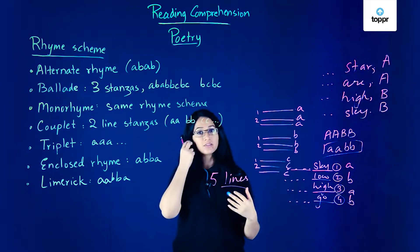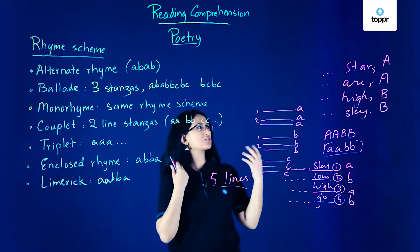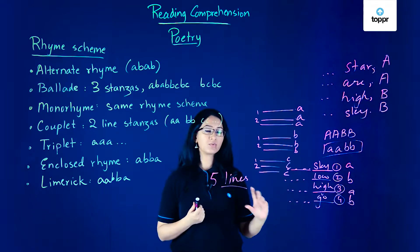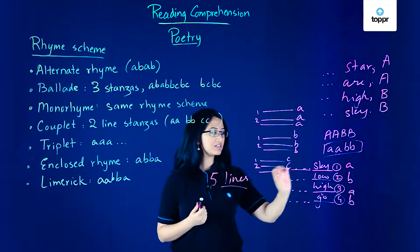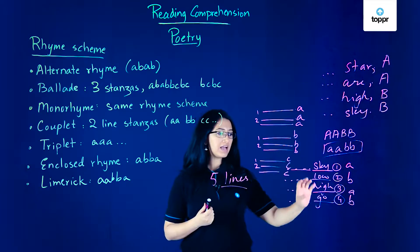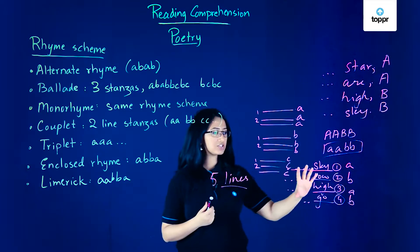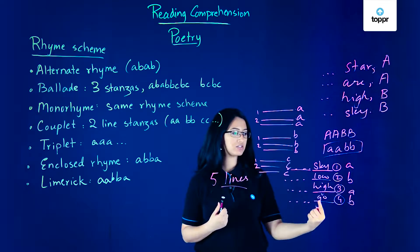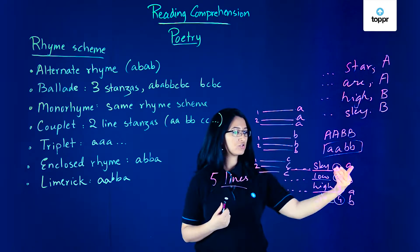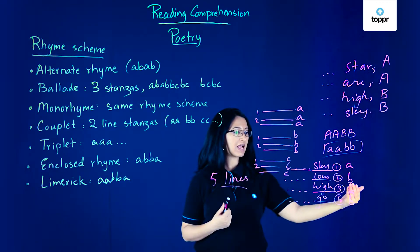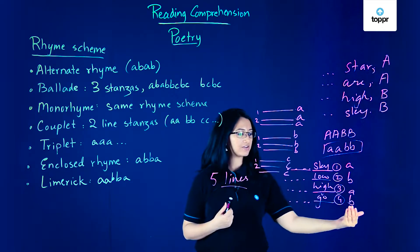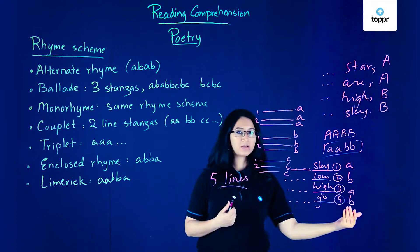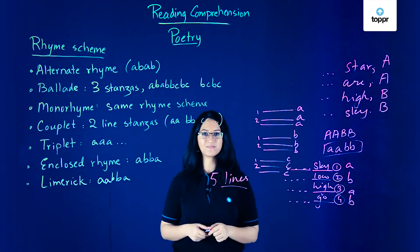An easy way to determine the rhyme scheme is to look at which words rhyme with each other. Read the poem, and for each stanza figure out which end words are rhyming, mark them with a letter, and then identify the rhyme scheme for each stanza.